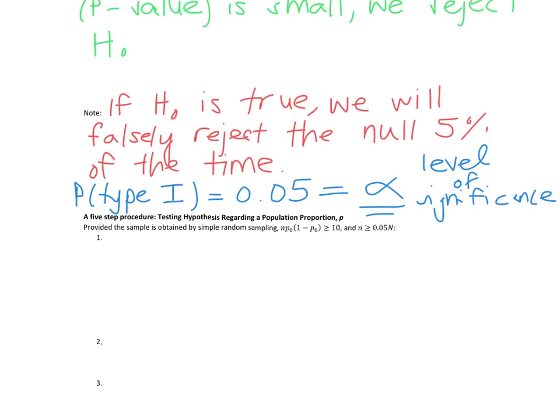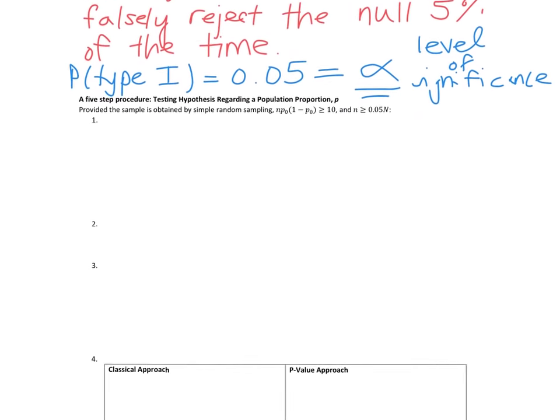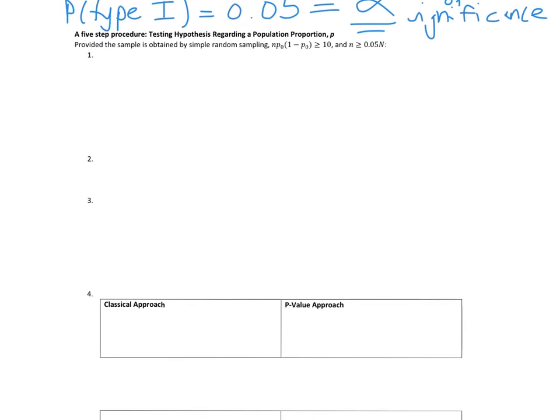Let's look at our example. It's a five-step procedure. We're going to go through all the steps in detail and then we're going to have a clever acronym to help us. First of all, we have to make sure we have our qualifications: simple random sample, N times P times 1 minus P greater than or equal to 10, and independence.